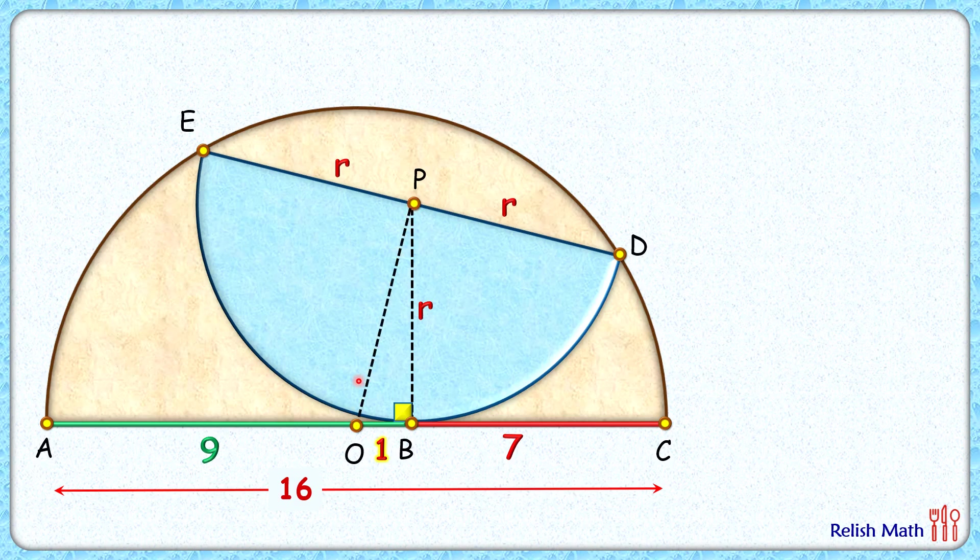Now in this right angle triangle, if we can get the value of PO, we can apply Pythagorean theorem to solve and get radius r. For that, let's join E and O here.